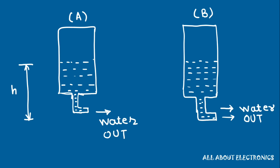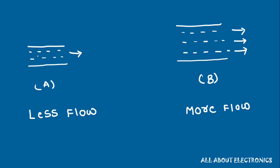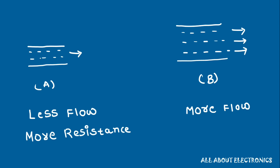Here we have two water tanks which contain an equal amount of water, but both tanks have a different diameter hose pipe. The tank with the larger diameter hose pipe will have more flow of water. In the second case, where the diameter is small, the flow of water will be less, because the water encounters more resistance through the smaller diameter pipe.